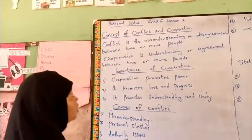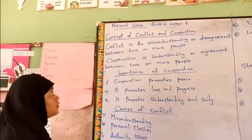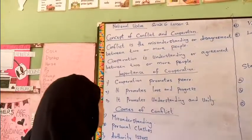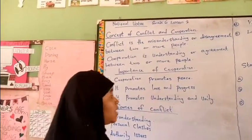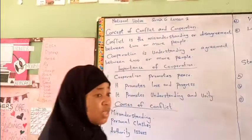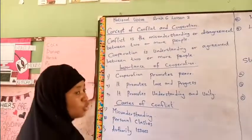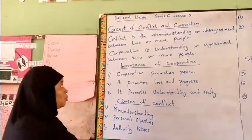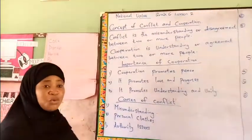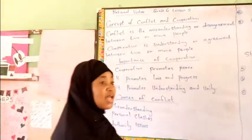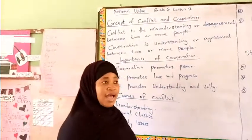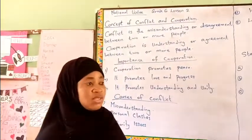We'll be looking at the meaning of conflict and cooperation. Conflict is the misunderstanding or disagreement between two or more people. For example, you people in the class can have misunderstanding among yourselves and settle it.